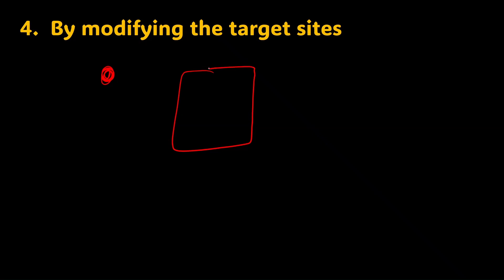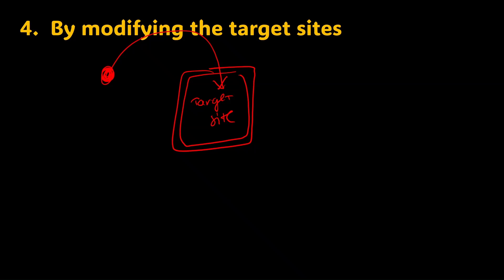The last mechanism is modification of the target site. For an antimicrobial agent to act after entering the bacteria, it must bind to a specific target site. In this mechanism, the bacteria modifies the target site itself so that the antimicrobial agent is no longer able to bind to it and cannot mediate its action.